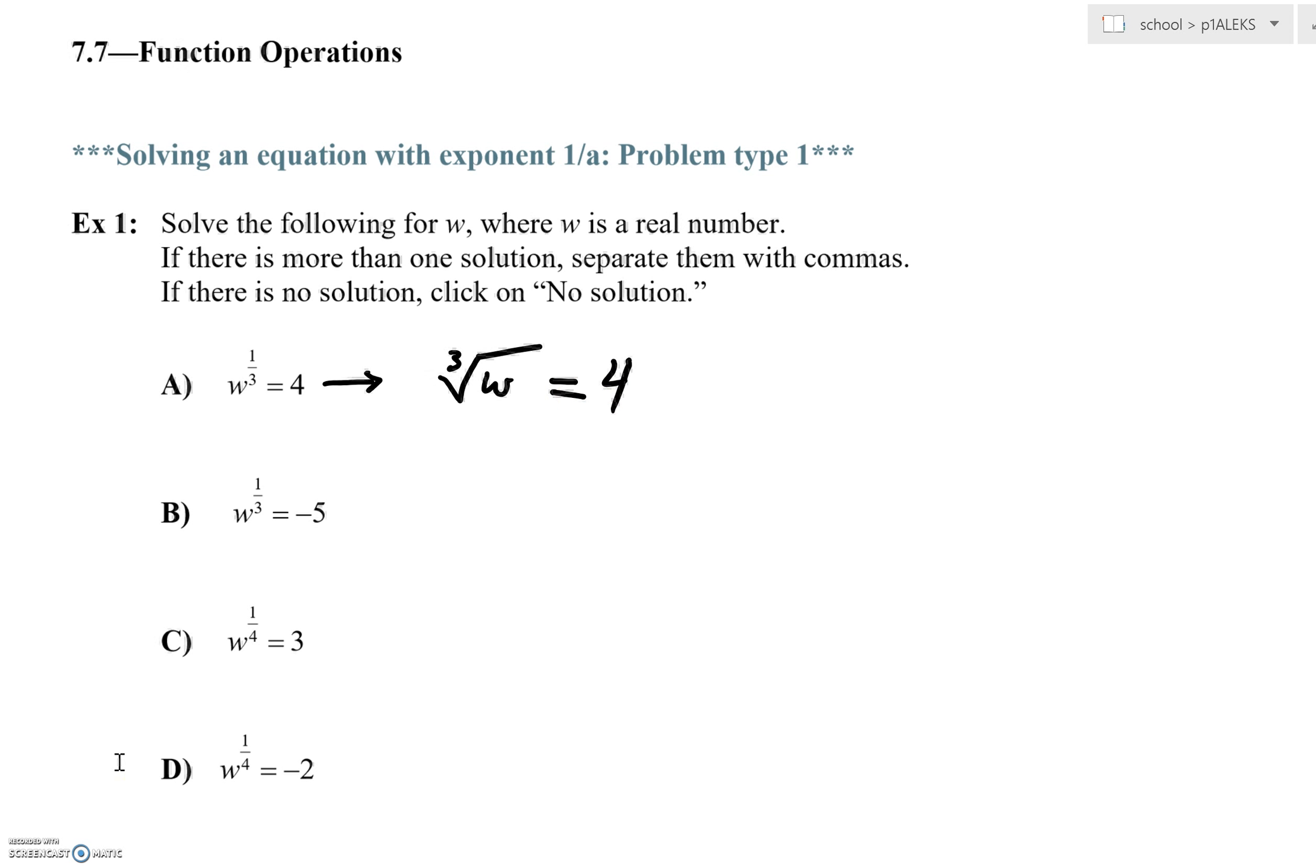At this point, you're going to notice that we're doing what we did yesterday. How do we get rid of a cube root? What do we have to do to both sides? Raise it to what power? To the third. Now, I'll leave it to you very quickly to see that 4 raised to the third power is 64.